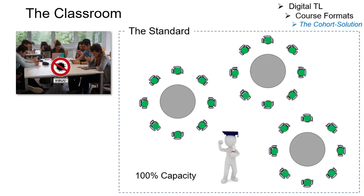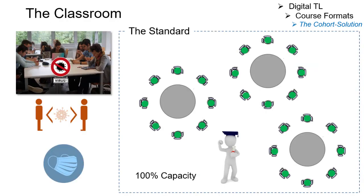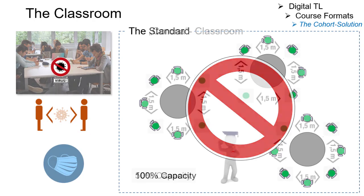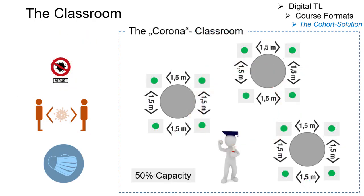However, the current situation with its specific distance and hygiene protection rules prevents us from using the full capacity of our classrooms. If the distance rules are adhered to, in many cases only 50% of the capacity of a classroom can be used. However, since there is usually no compulsory attendance, especially in basic courses, this is also the solution.